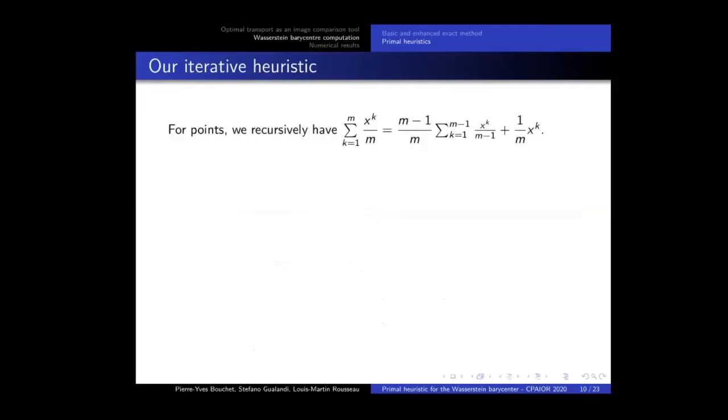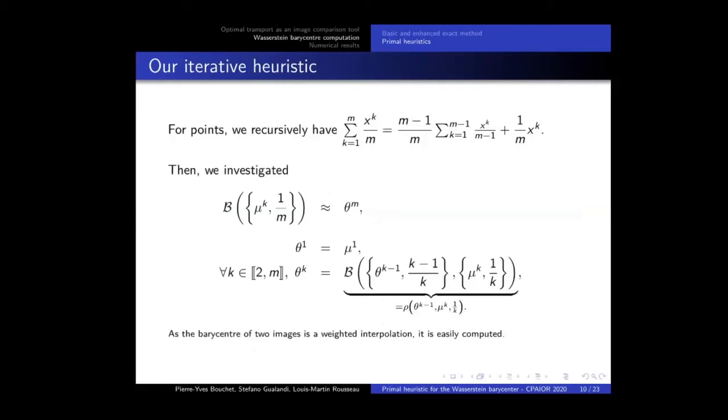The first heuristic we developed uses an alternative formula for the barycentre of points. As you can see here, the barycentre of n points can be computed recursively, using the barycentre of n-1 first input, on which we add the last one. And we use this formula to compute the first heuristic in that way. We start with the first approximation, theta 1 equal mu 1, and at each iteration k, we have the current barycentre theta k-1, and we add into it the input mu k. This is interesting because at each iteration, we compute the barycentre of only two inputs, and as we have seen above, it is quite fast and easy to do.